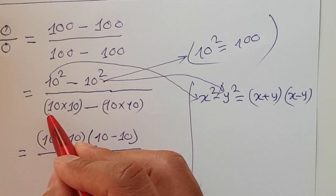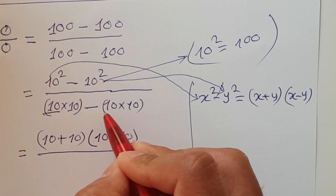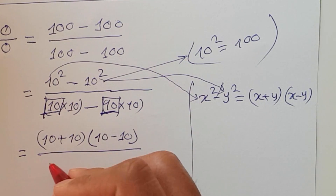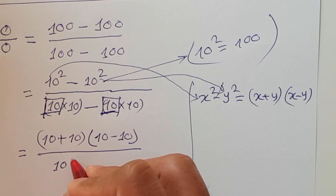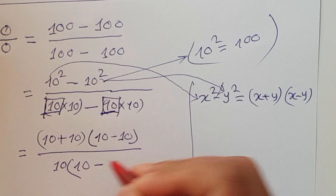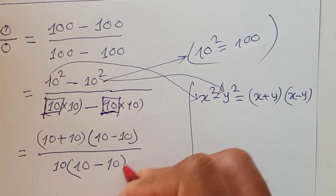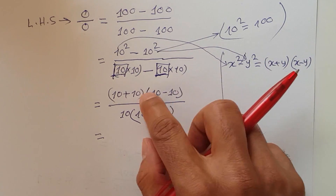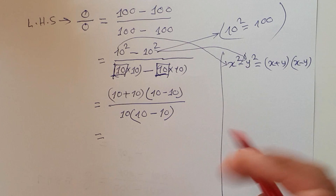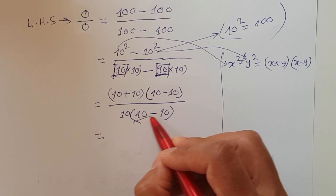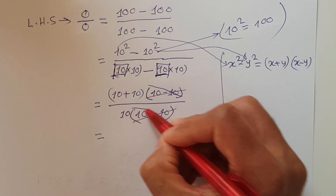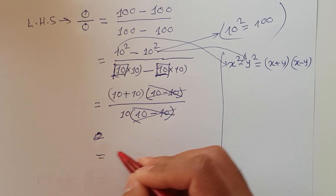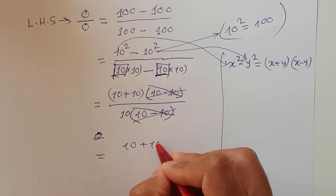From the denominator, 10 is common in both terms, so I can factor it: 10 times (10 minus 10). Now look — the numerator has (10 minus 10) and the denominator has (10 minus 10). They are the same, so we can eliminate both of them from numerator and denominator.